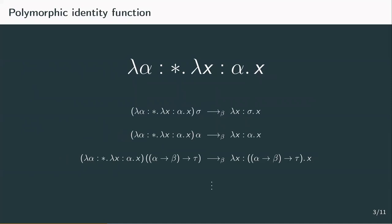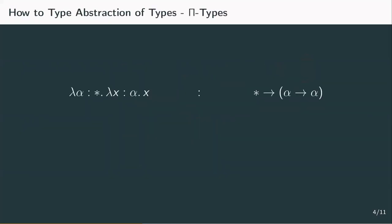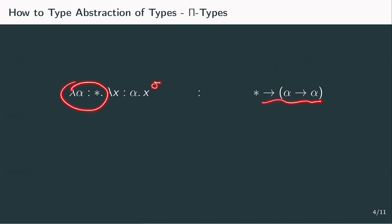Before we get into the formal definition of all of these notions, there's one more intuition that we need to cover. We've introduced a new kind of abstraction and corresponding application. The type of this new term is still unclear. We might use the supertype star to show that the term takes a type as an input and then returns a function from alpha to alpha. But this becomes a bit problematic: at the moment, the type of the term is independent from the type the term gets as its input, although the output type heavily depends on it.